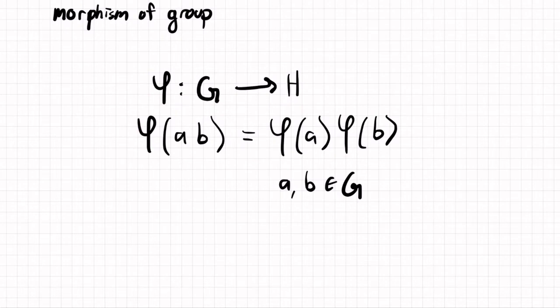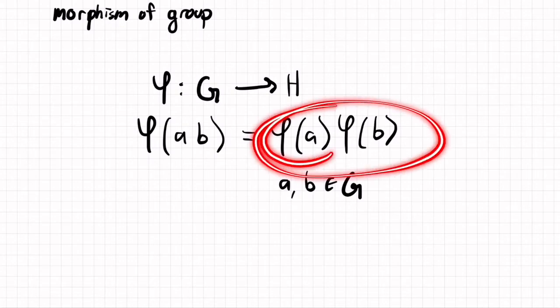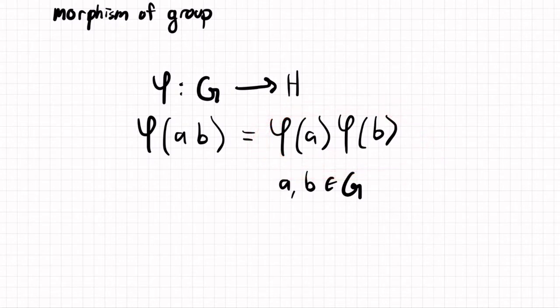Somehow these homomorphisms of groups are quite important, as they somehow respect the multiplication structure on the group. So of course, for this I'm using multiplicative notation, right? If it were an additive group, you'd have something different.